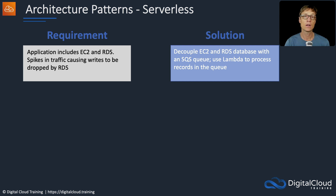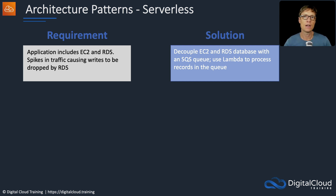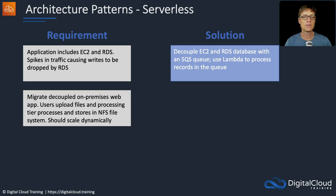Even where you have an architecture that involves components that are not serverless, like EC2 and RDS, you can decouple those. It's also a way that you can use a serverless service — it might be easier to scale the Lambda function, and it might be cheaper to run for processing those records than using an EC2 instance to consume messages from the queue.